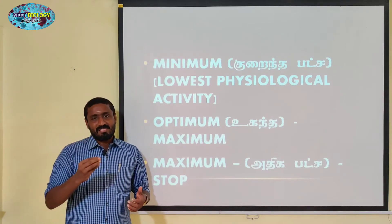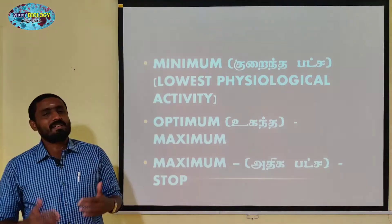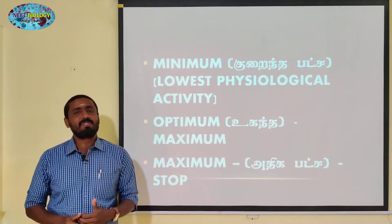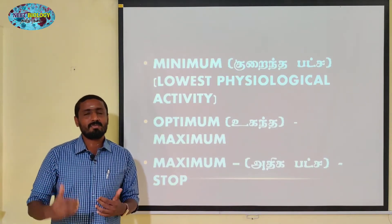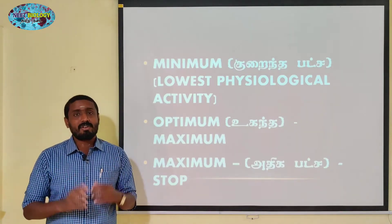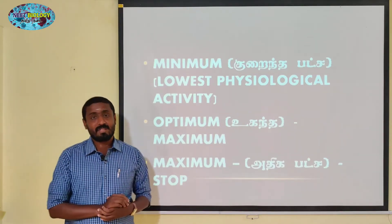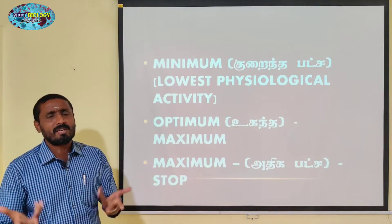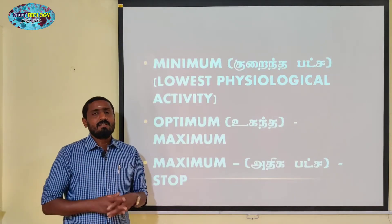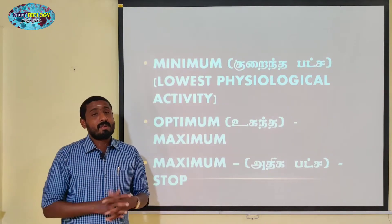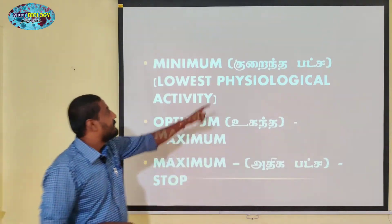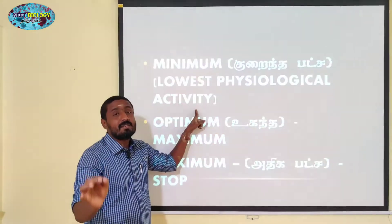Carbohydrates are digested and broken down in the blood and cells, producing by-products and a main product called ATP. ATP is energy — this is the metabolic activity. There are many types of chemical reactions; all these chemical reactions are the physiological activity.